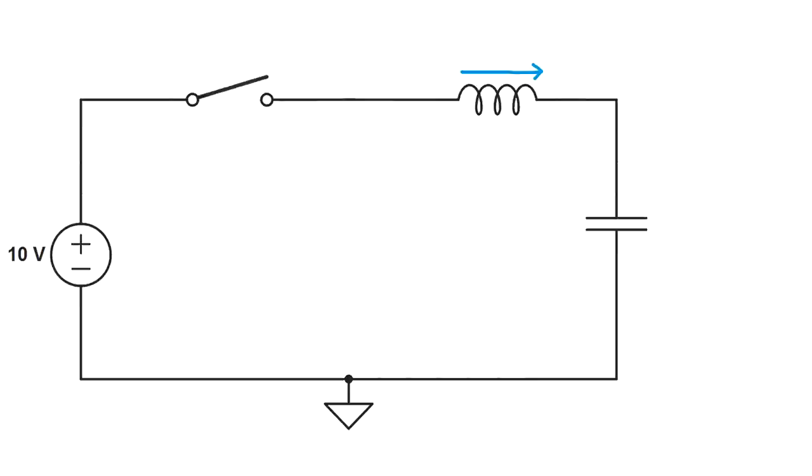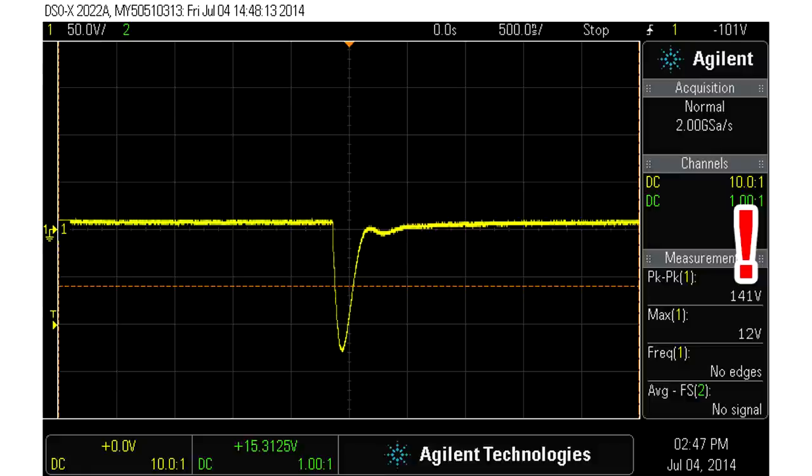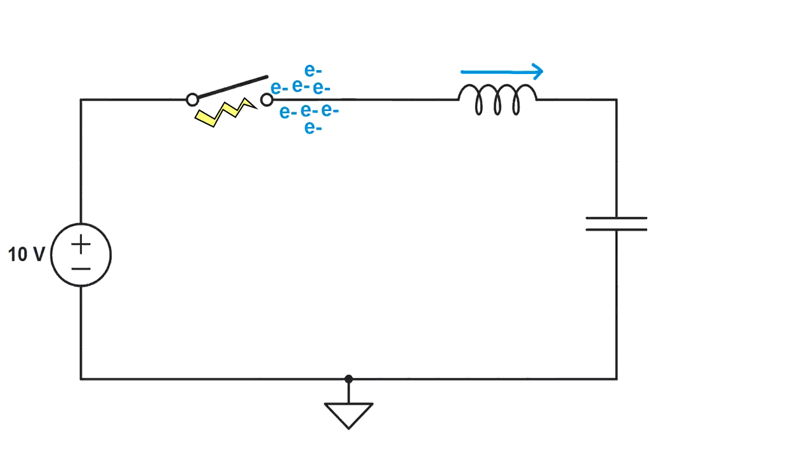Now let's open the switch. Since current in an inductor cannot instantly change, this means that current is still flowing through the inductor. But this side of the inductor isn't connected to anything. So you get this huge mass of electrons building up here creating a massive negative voltage spike. This voltage spike can reach hundreds or even thousands of volts, enough to blow up any switch you connect here.